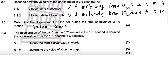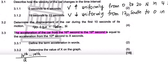Question 3.3: The acceleration from the 16th to the 19th second equals the acceleration from the 10th to the x-th second. Acceleration is the rate of change of velocity. Remember: if you have a velocity-time graph and work out the gradient, you get acceleration. If you work out the area, you get displacement.